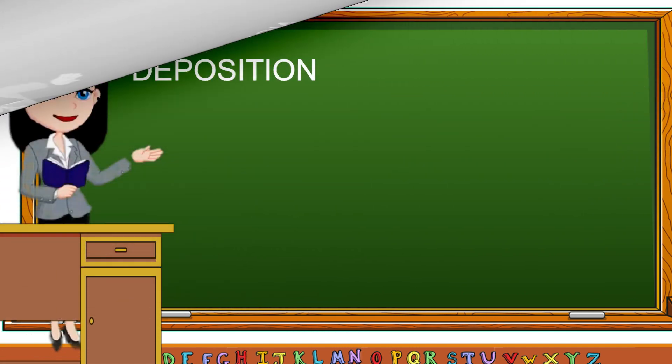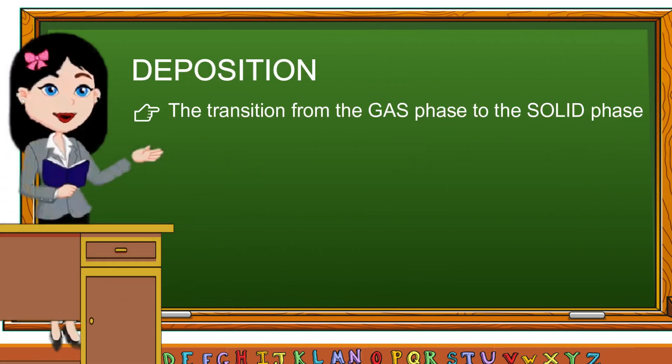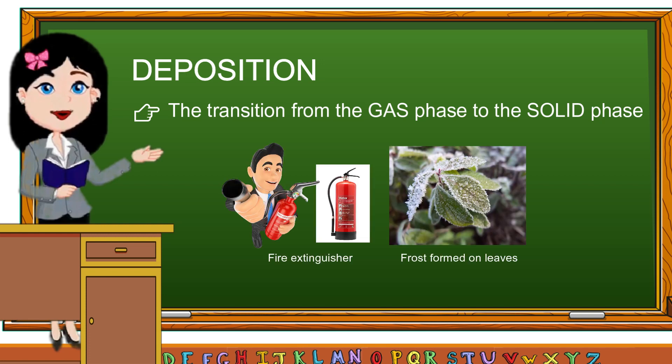The transition from the gas phase to the solid phase is known as deposition. Deposition is the opposite of sublimation. A fire extinguisher and frost forming on a leaf are some examples of deposition.